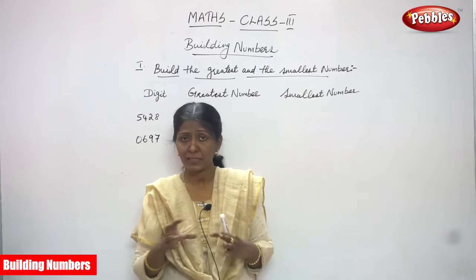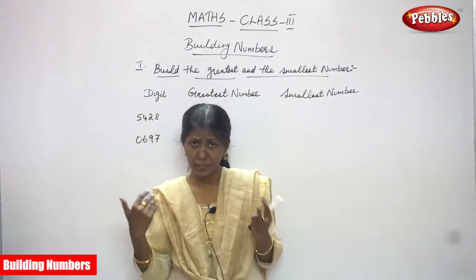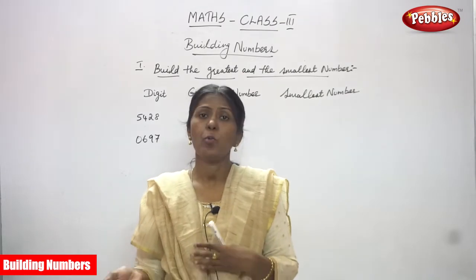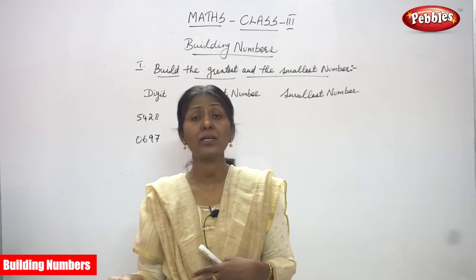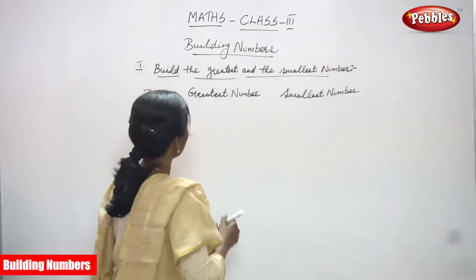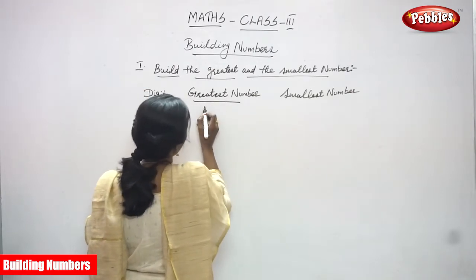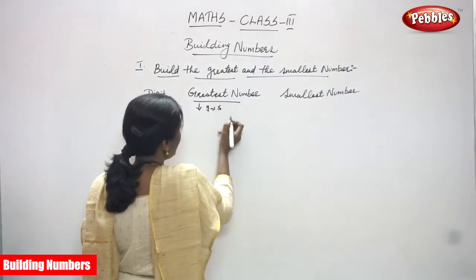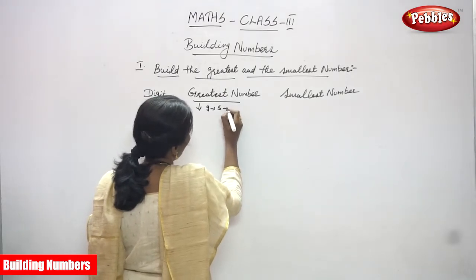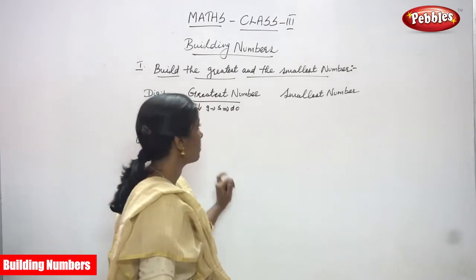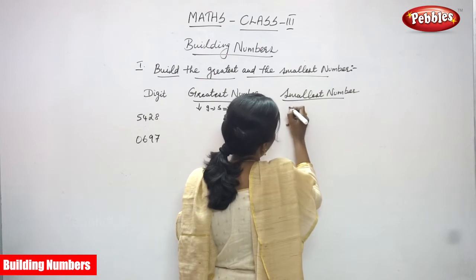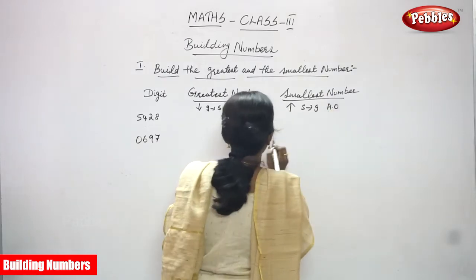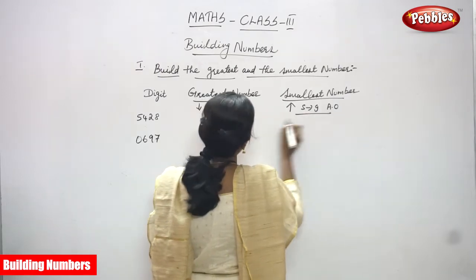For the smallest number, we arrange numbers in increasing order — that means ascending order, smallest to greatest. So greatest number means decreasing order, descending order. Smallest number means increasing order, ascending order. D.O. means descending order, and A.O. means ascending order.